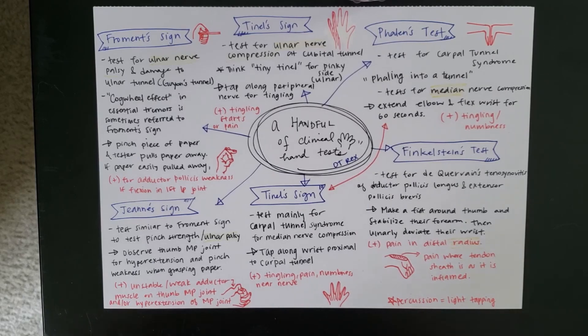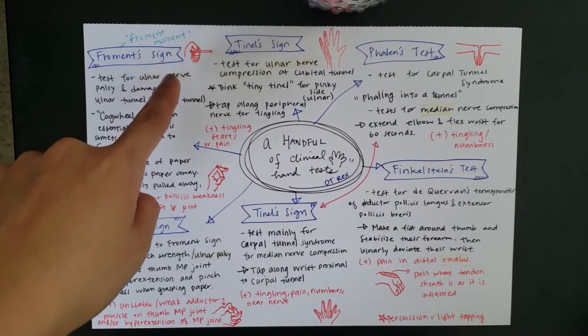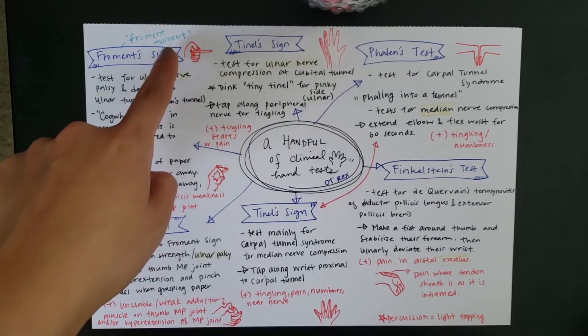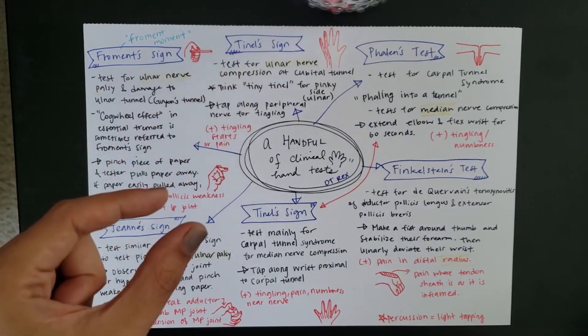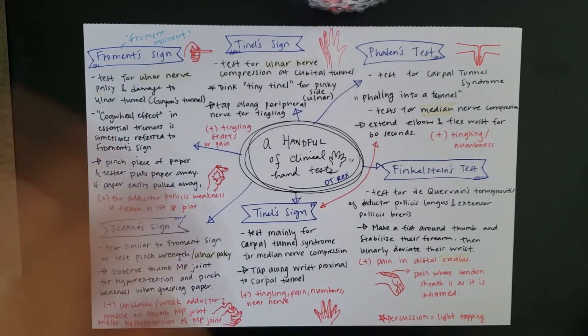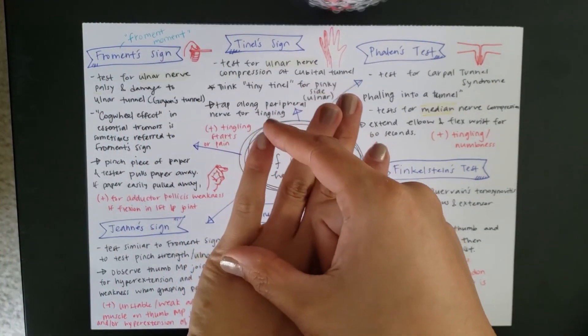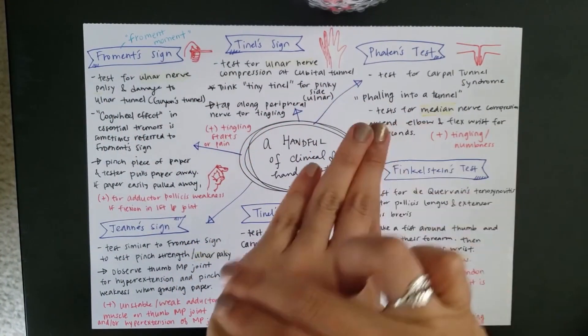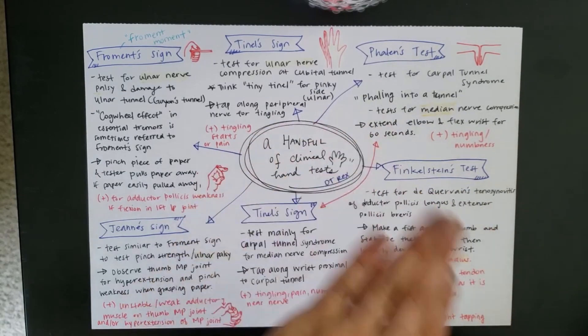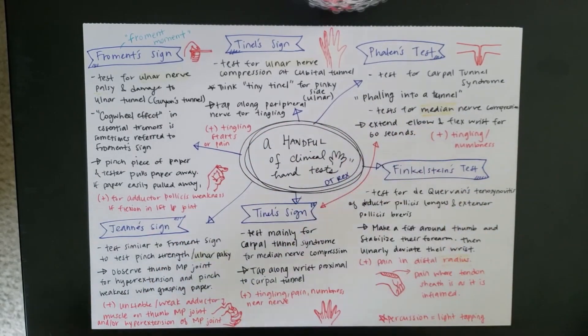But I want to quickly add that the way I remember Froment's sign is a Froment moment. I just added that. And I think of how a moment is very short. It's just gone. So, when I think of our fingers, I think of how our pinky is short. And that's the ulnar side. So, Froment's, moment, short, testing for the ulnar nerve palsy.